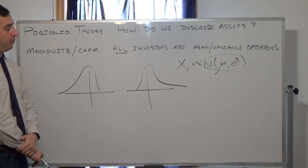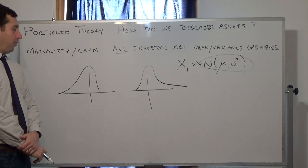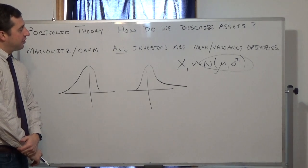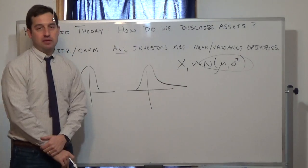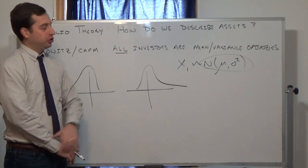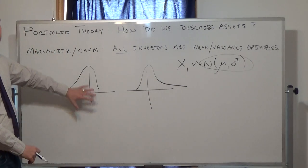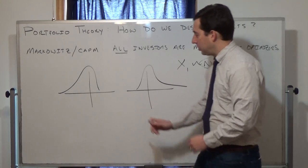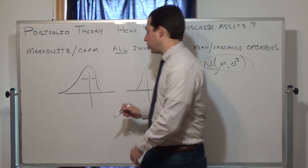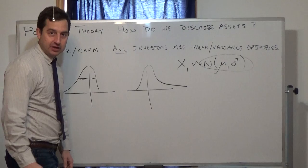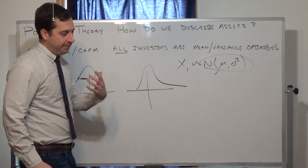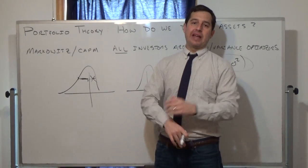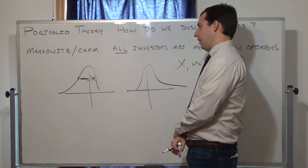We absolutely do find skewed distributions when we look at how stocks and bonds actually behave. There's research showing that certain classes of investors actively seek out positively skewed assets, while negatively skewed assets — with a long left tail — are undesirable. When using standard deviation on a negatively skewed distribution, you're averaging over both positive and negative deviations when you really only want to measure downside. This is why we have downside risk measures that only look at the left tail.